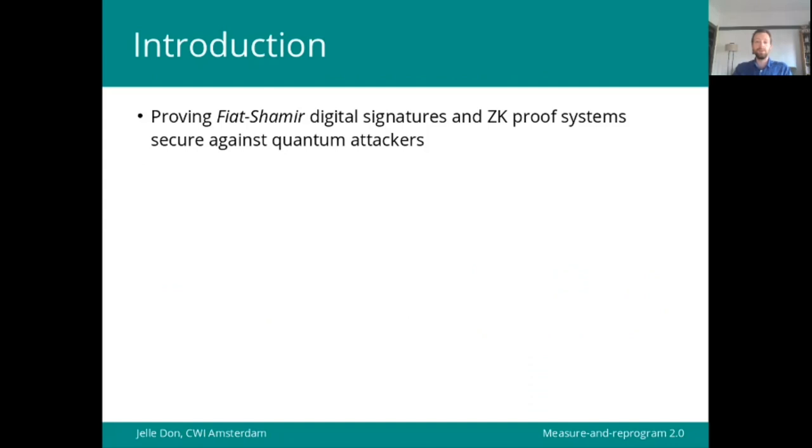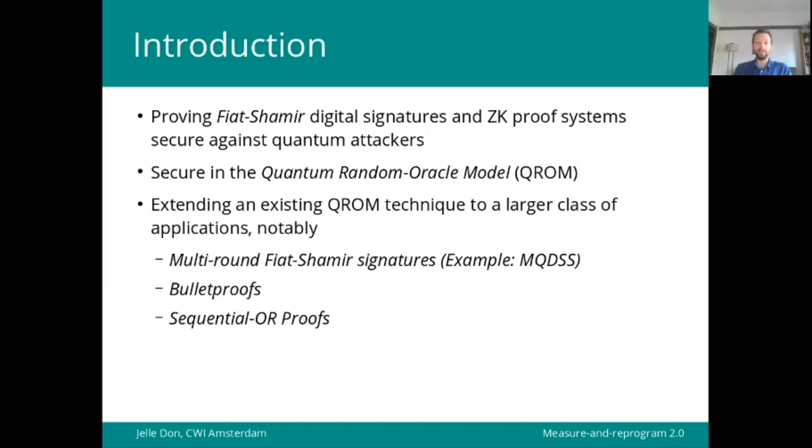Our work is about proving Fiat-Shamir digital signatures, and in general Fiat-Shamir zero knowledge proof systems, secure against quantum attackers. We extend an existing QROM technique to a larger class of applications, notably multi-round Fiat-Shamir signatures of which MQDSS is an example, bullet proofs and sequential OR proofs. We also show that the reductions we get are essentially tight.